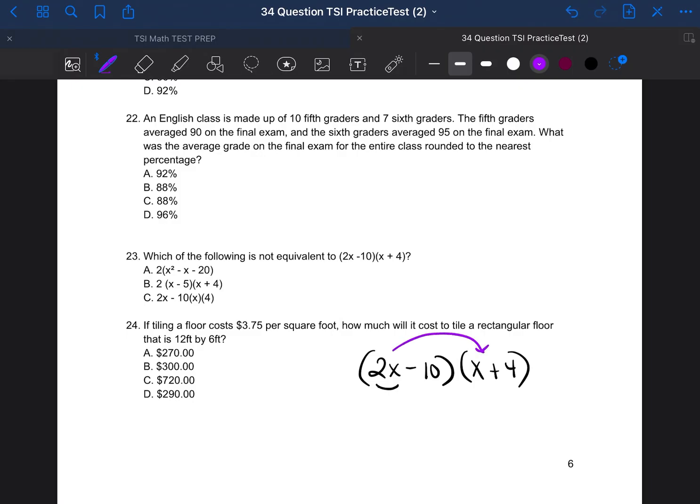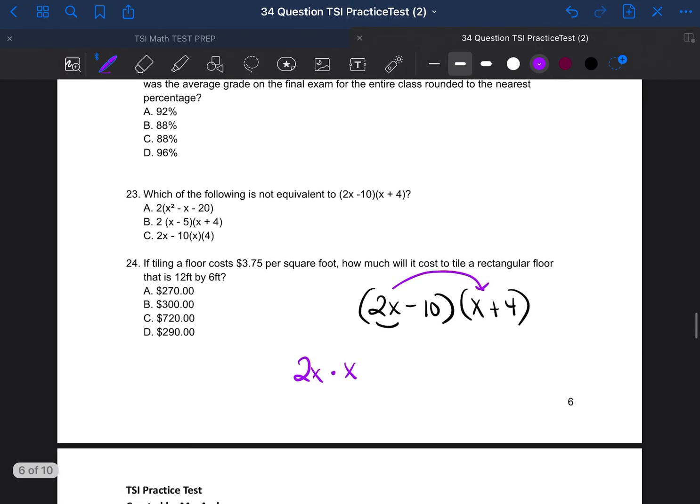So 2x times x. Now, x to the first power, x to the first power. So there's an invisible one in front of it. 2 times 1 is 2. And then x to the first power times x to the first power. You add the powers. 1 plus 1 equals x squared. So 2x squared. So I wrote that out just for you guys to see it. 2x squared.